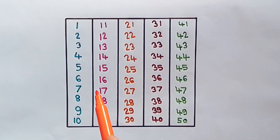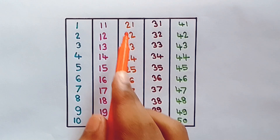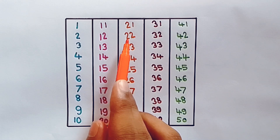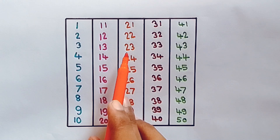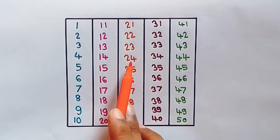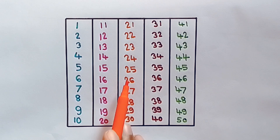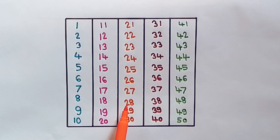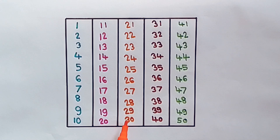Orange color. 21, 22, 23, 24, 25, 26, 27, 28, 29, 30.